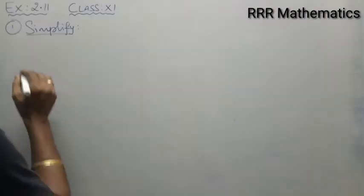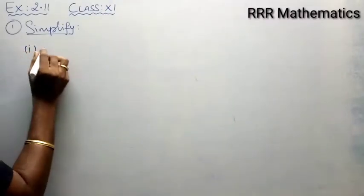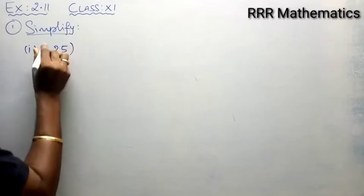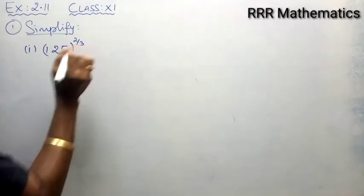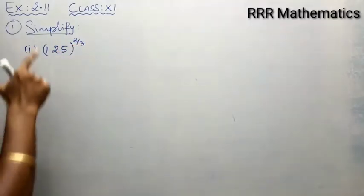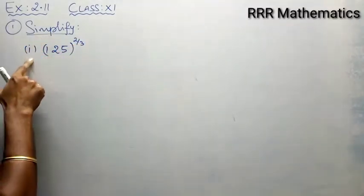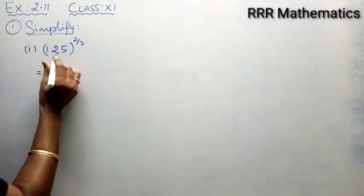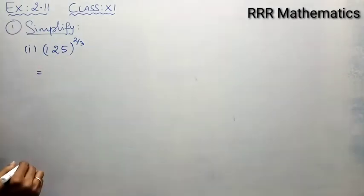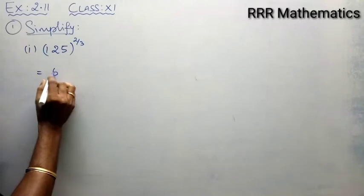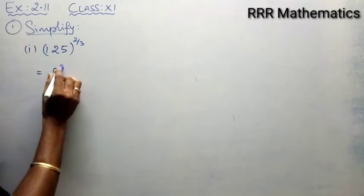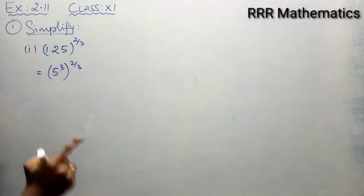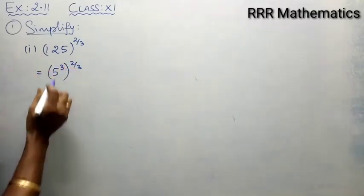See the very first problem. We have 125 whole power 2 divided by 3. Simplify: 125 whole power 2 by 3. Here, the base is 125. What is the prime factorization? 5 cubed — because 5 × 5 × 5 = 125.